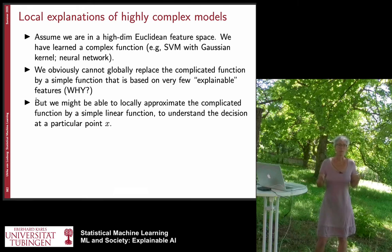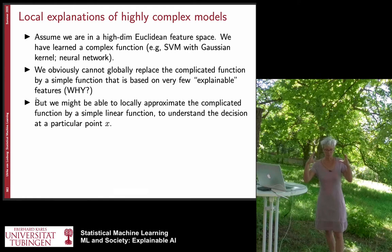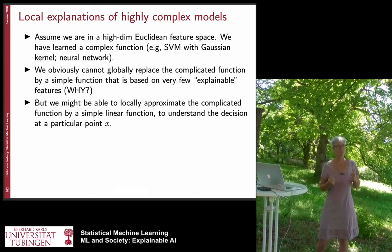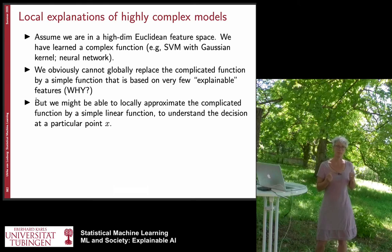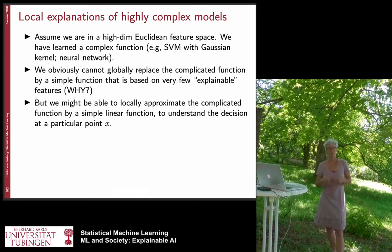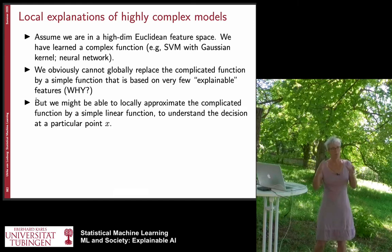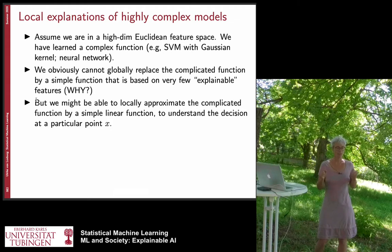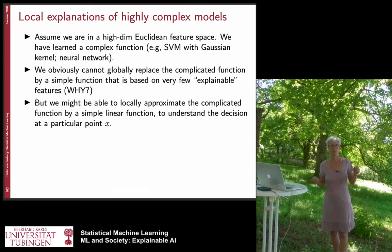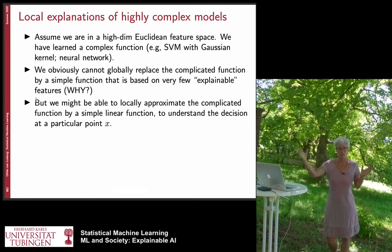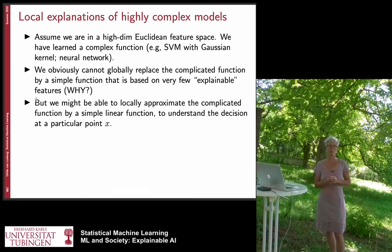But what we can do is try to approximate this complicated function locally by something much simpler. We might be interested in an explanation for the prediction on one particular input — say, one patient gets a diagnosis, and we want to explain why. The idea of local explanations is that you locally approximate the decision function in the region around that patient with something simple. Even though globally the decision surface between two classes might be very complicated, locally you might be able to approximate it with a linear function or something very simple, and then generate an explanation from that.